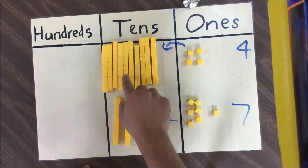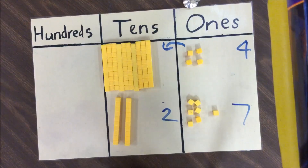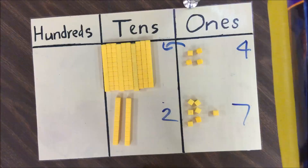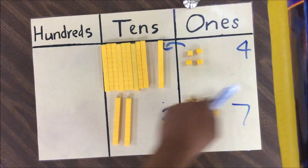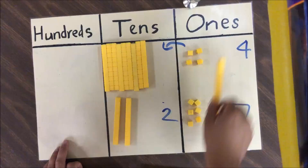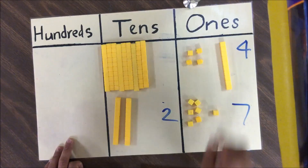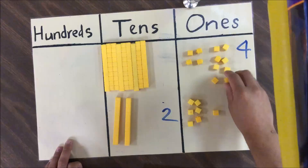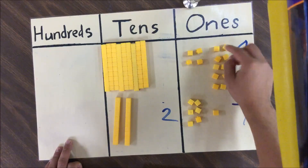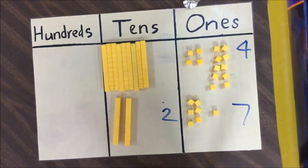I'm going to take the whole hundreds piece and break it down into 10 individual rod pieces. So now I have 1, 2, 3, 4, 5, 6, 7, 8, 9, 10 rods in the tens place — which represents exactly the same value as one whole hundreds piece. Now that we have value in the tens place, I'm going to borrow one of these individual rods and move it over to the ones place, breaking it down so we substitute it for 10 individual cube pieces: 1, 2, 3, 4, 5, 6, 7, 8, 9, 10.